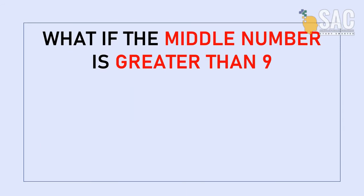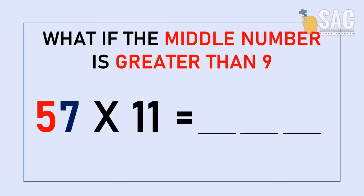But what if the middle one is greater than 9? Let's have a go with this example, 57 times by 11.